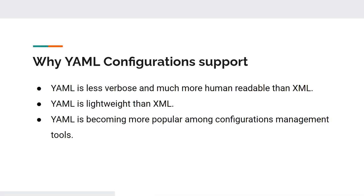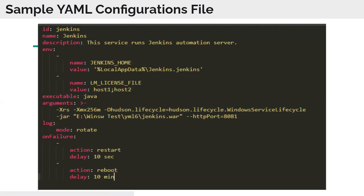Let's talk about YAML configuration support and why we decided to move to YAML. YAML is less verbose and much more human readable than XML. XML is a great language for managing configuration, but YAML is becoming more popular among configuration management tools and is also more lightweight than XML and JSON. Since YAML is becoming much more popular in the community, it's really fair to provide YAML configuration support for Windows Service Wrapper. This is how a sample YAML configuration file looks like — there are a lot of configurations apart from this, and you can see it's much more human readable and beginner friendly than XML.